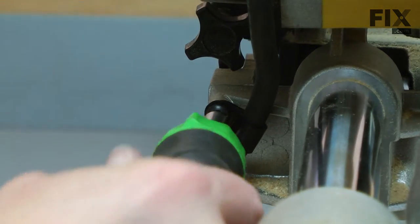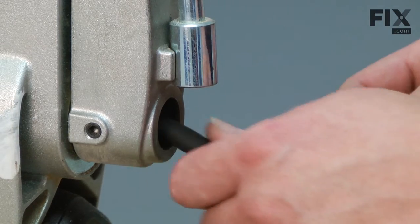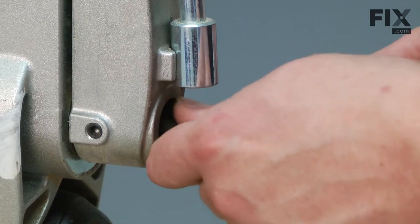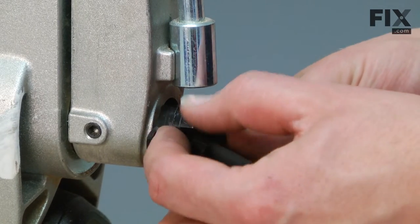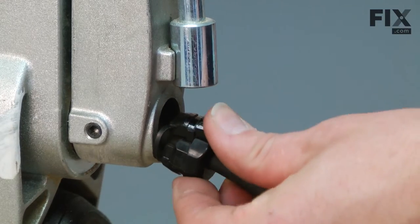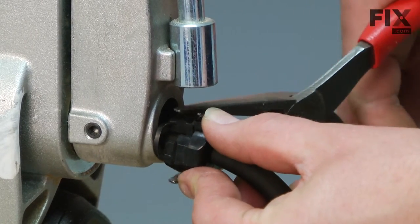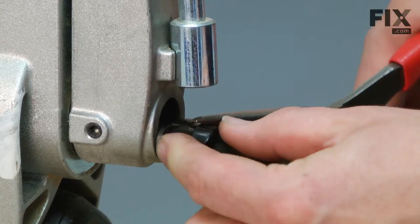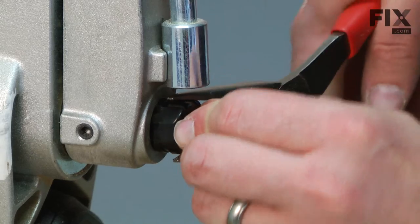Now, last, I'll reinstall the strain relief. First, I'll pull any slack that's in the cord out. Then I slide the relief onto the cord, and use a pair of pliers to clamp it together. Then I can slide the whole assembly into the saw body. Then I'll pull any slack that's in the cord.